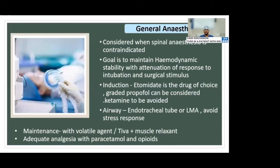General anesthesia is considered when spinal anesthesia is contraindicated. The goal is hemodynamic stability with attenuation of response to intubation and surgical stimuli. Etomidate is the drug of choice for induction; graded propofol can also be considered. Ketamine is better avoided. For airway, endotracheal intubation or LMA can be considered. Avoid stress response. Maintenance can be with volatile agents or TIVA with muscle relaxants. Adequate analgesia should be provided. Avoid diclofenac and NSAIDs; consider paracetamol, opiates, and intrathecal block.